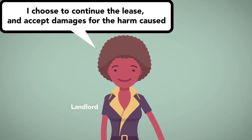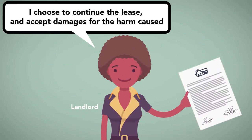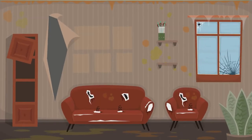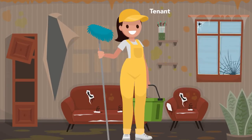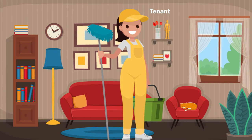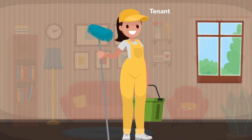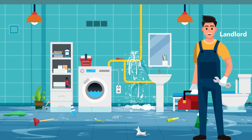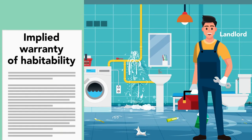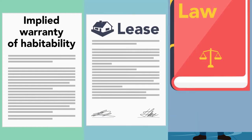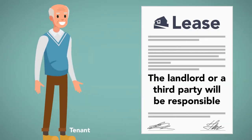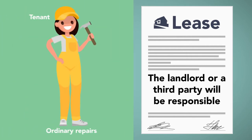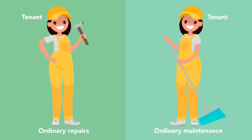Alternatively, the landlord may choose to continue the lease and accept damages for the harm caused. In the same vein, the tenant also has the duty to repair and maintain a rental property to keep it substantially in the same condition as it was when the lease commenced. When the landlord is generally required to make major repairs under the implied warranty of habitability, as well as per the lease and state law, unless the tenant specifically contracts with the landlord stipulating that the landlord or a third party will be responsible, the tenant is expected to make ordinary repairs and engage in ordinary maintenance.